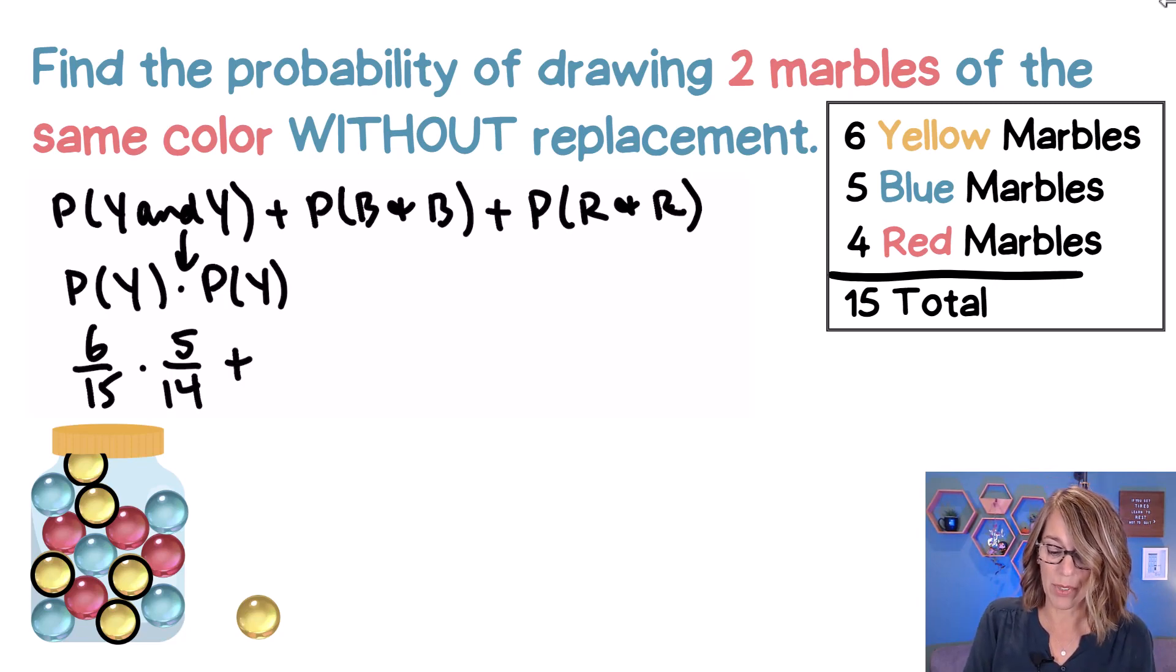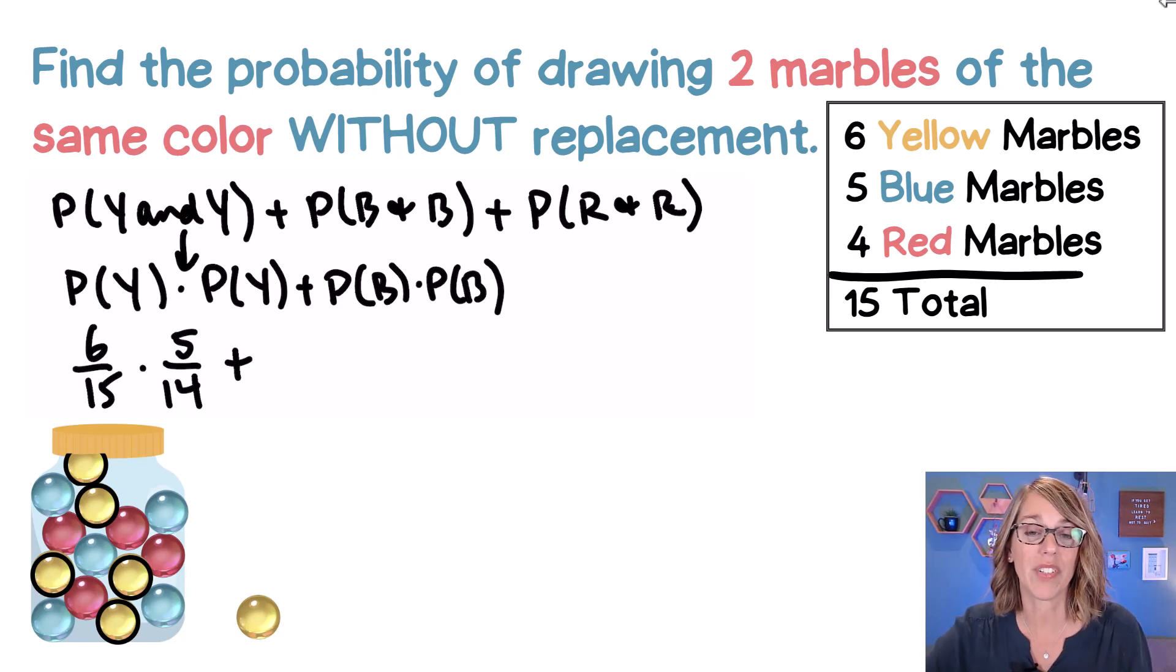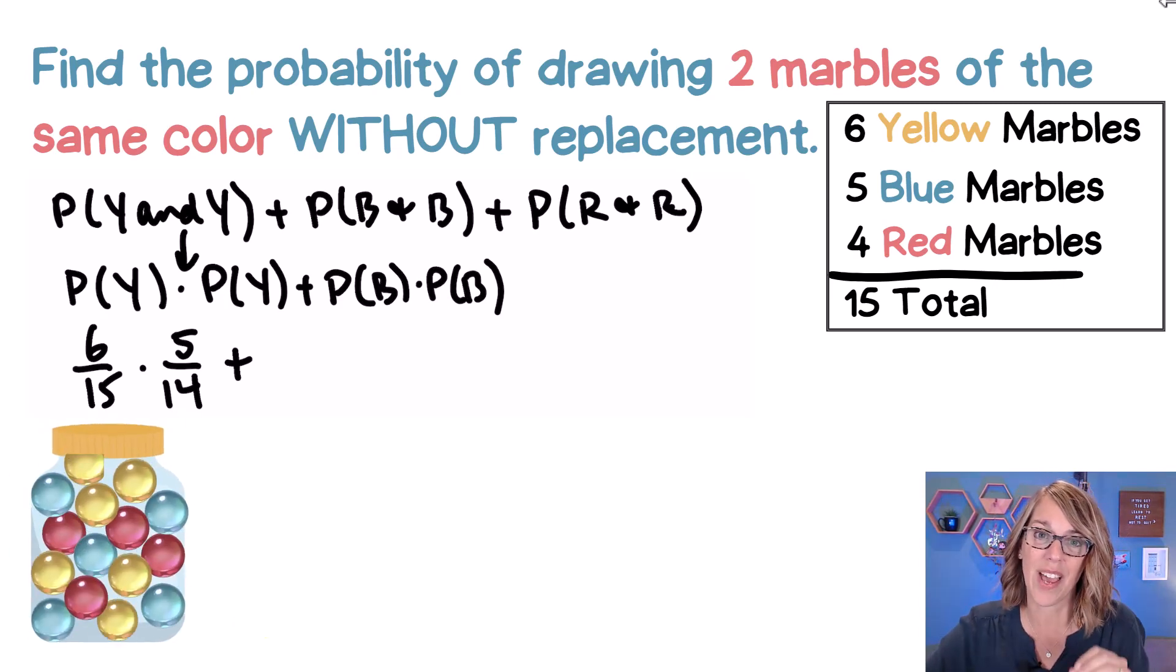So the probability, this is going to be plus the probability of blue times the probability that the second one is blue. We're going to do this one very much the same way, but it's its own new case. Let's fill that marble jar back up and go back and draw a blue one. So the probability of getting that first one to be blue, there are five blue marbles out of the 15.